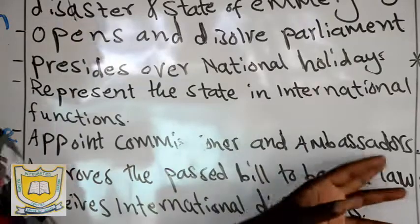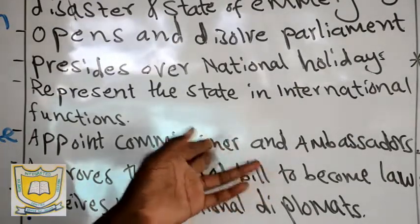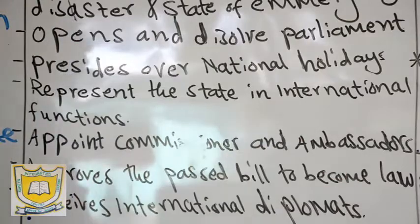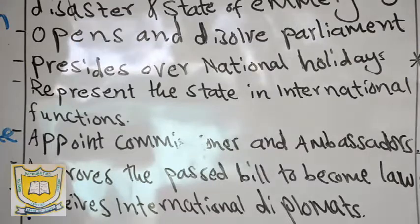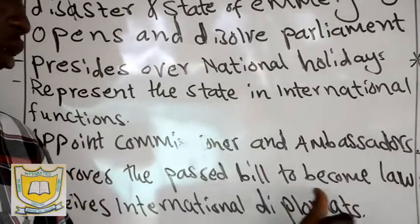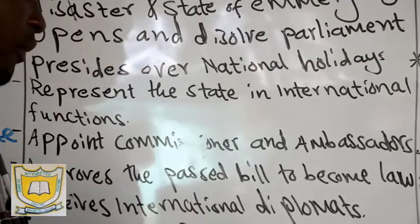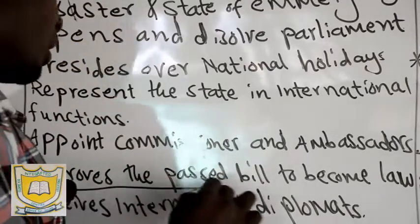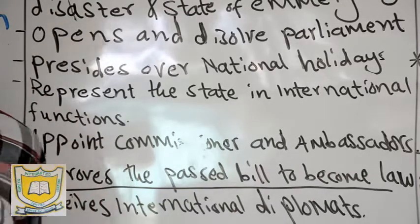He appoints commissioners and ambassadors. He appoints members of the government like ambassadors who represent our government in different countries, as well as commissioners. Then he approves bills passed by the parliament to become law — it's called presidential assent. After the passing of a bill in the parliament, the president should sign so that it becomes a law and starts operating.